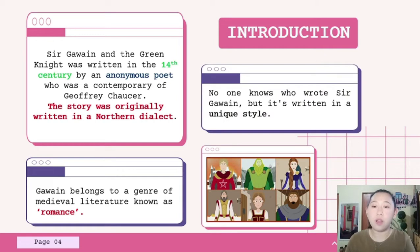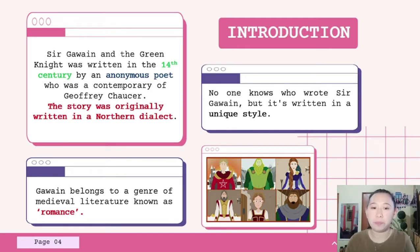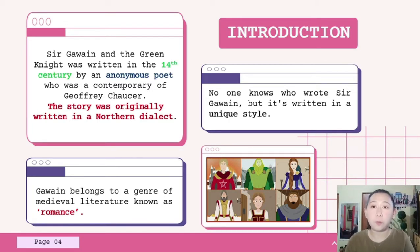No one knows who wrote Sir Gawain, but it is written in a unique style. The author responsible for Sir Gawain's distinctive style probably also wrote three other long poems contained in the same manuscript: Pearl, Patience, and Cleanness. Unlike Sir Gawain, these other poems are more obviously religious in nature. Because he also wrote Pearl, the author of Sir Gawain and the Green Knight is sometimes also known as the Pearl Poet.